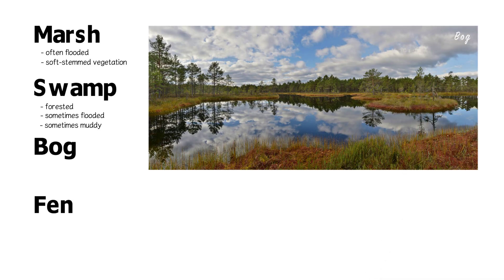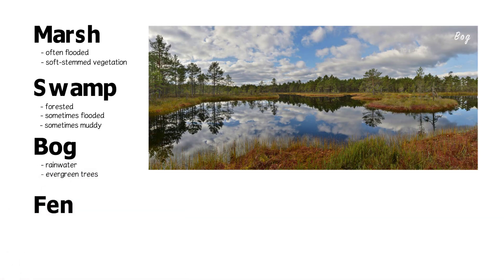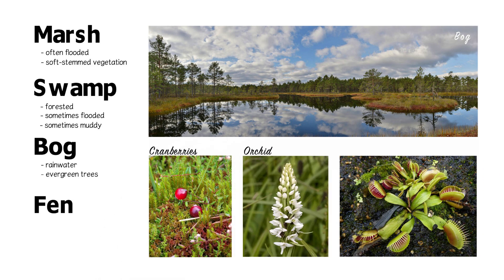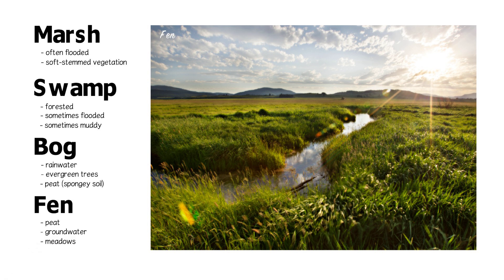Bogs are mossy, rainwater-fed wetlands with a variety of evergreen trees and shrubs. Many other beautiful and interesting plants such as cranberries, orchids, and even the insect-eating Venus flytrap are found in bogs. Bogs are well known for their spongy soil called peat. Peat forms from partially decayed plants and is common in many wetlands. Fens are also peat-forming wetlands, but they are groundwater-fed and look more like meadows with many grasses, weeds, and wildflowers.